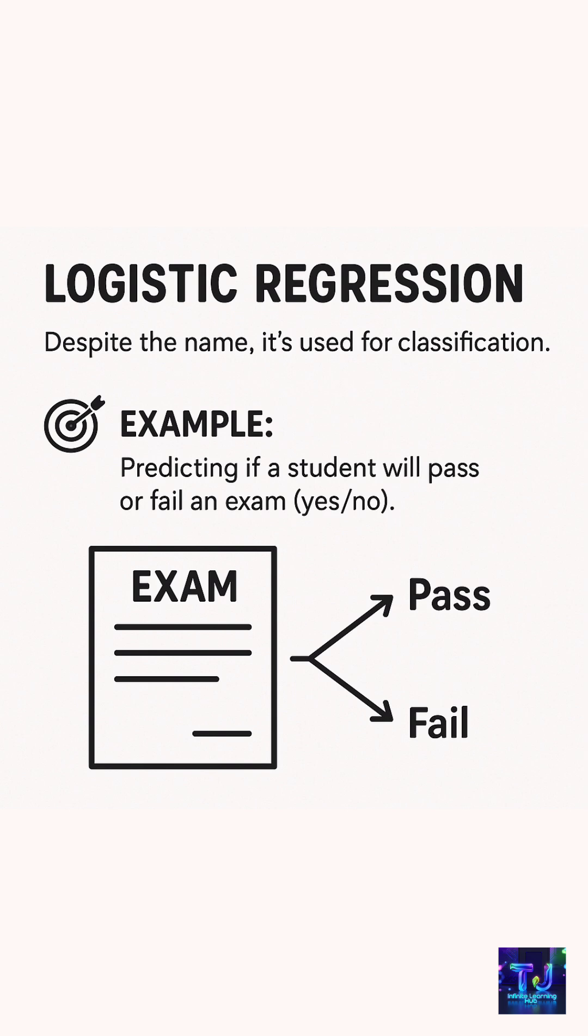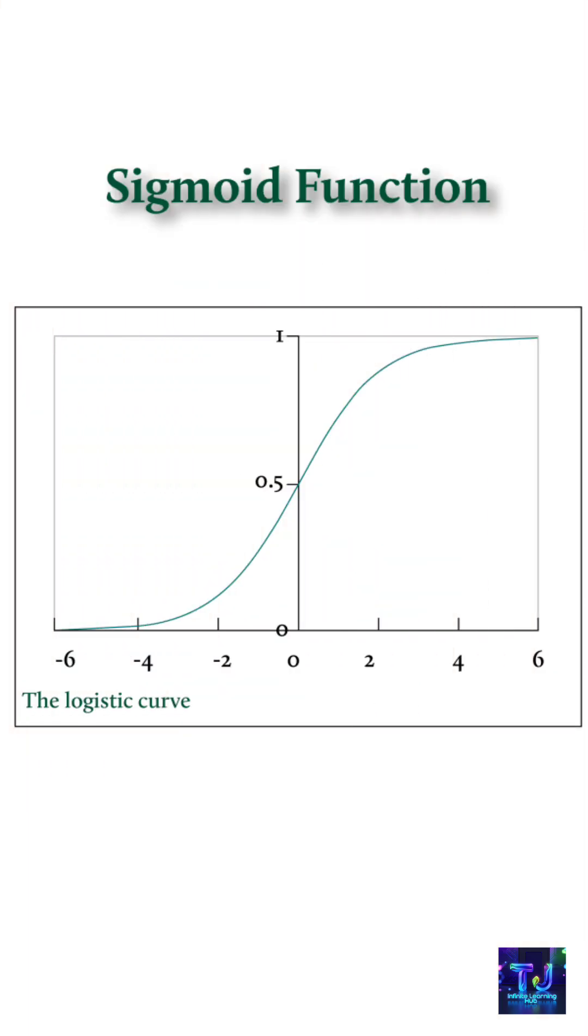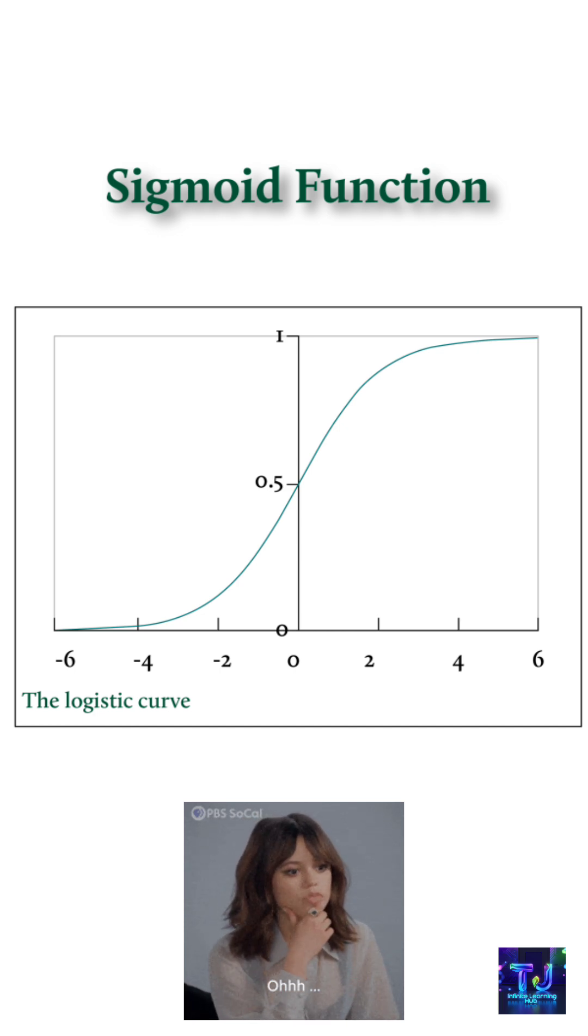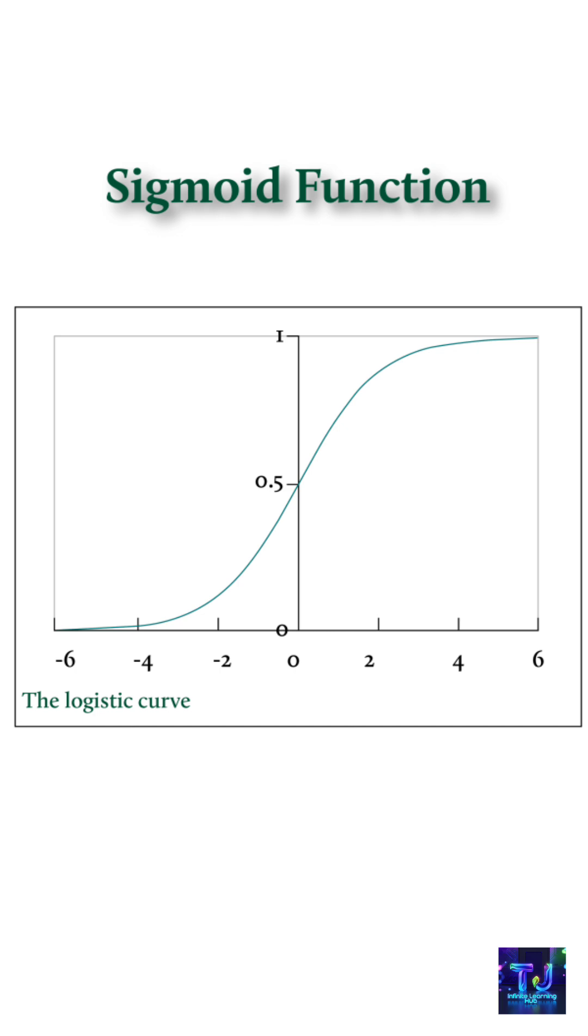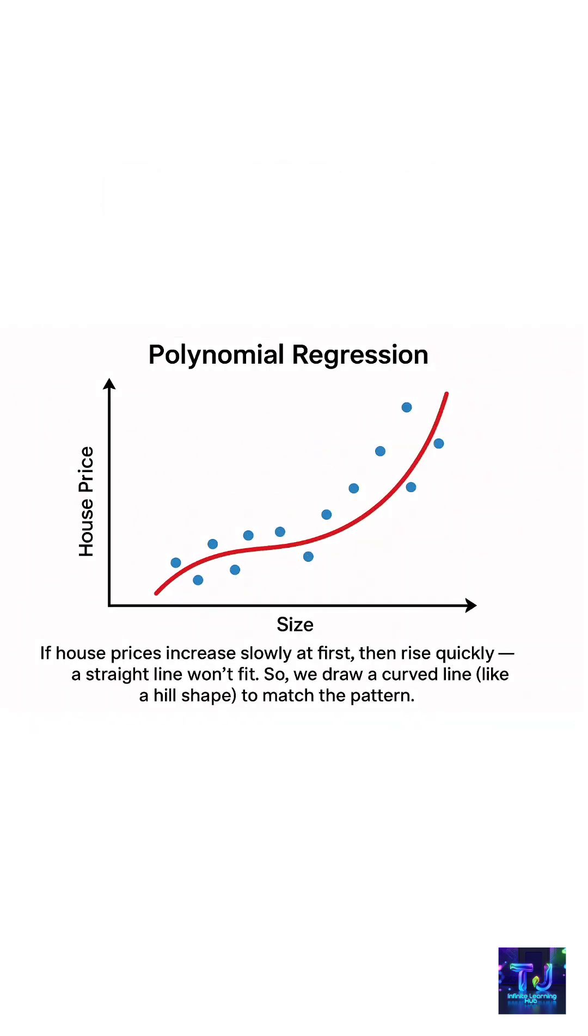Here's the answer. Logistic regression is used to predict categories like yes or no, or pass or fail. It's called regression because it first calculates a number just like linear regression. Then it uses a sigmoid function to convert that number into a probability and make the classification prediction.